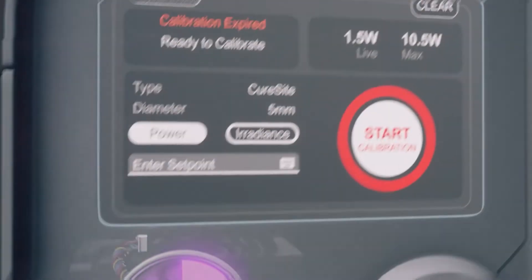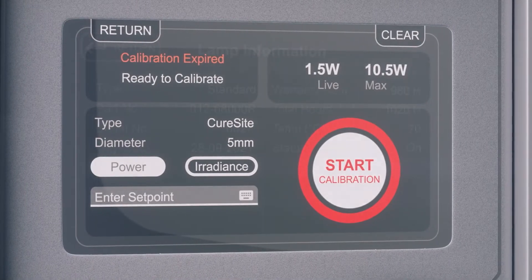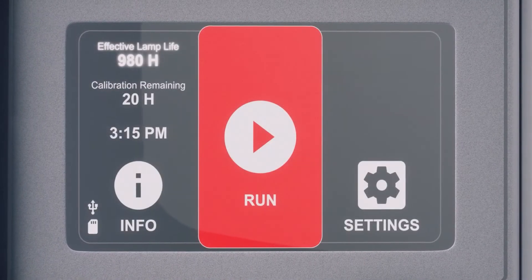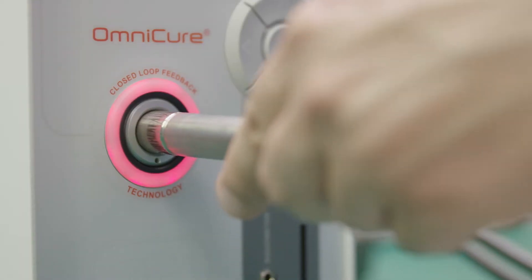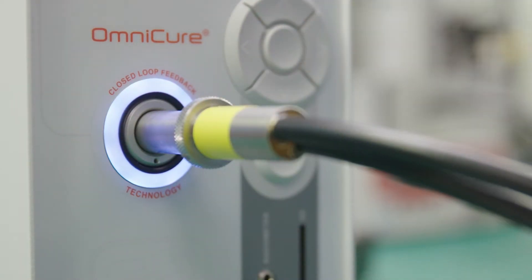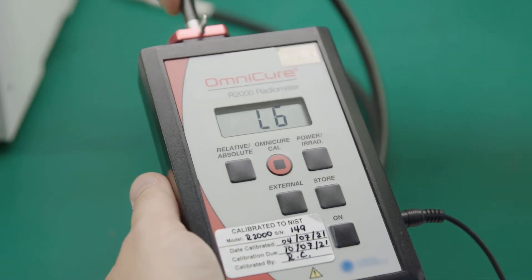The effective lamp life remaining is continually displayed based on the system's calibration state, lamp state, and output parameters, enabling you to schedule lamp replacements ahead of time at your convenience based on your specific process.